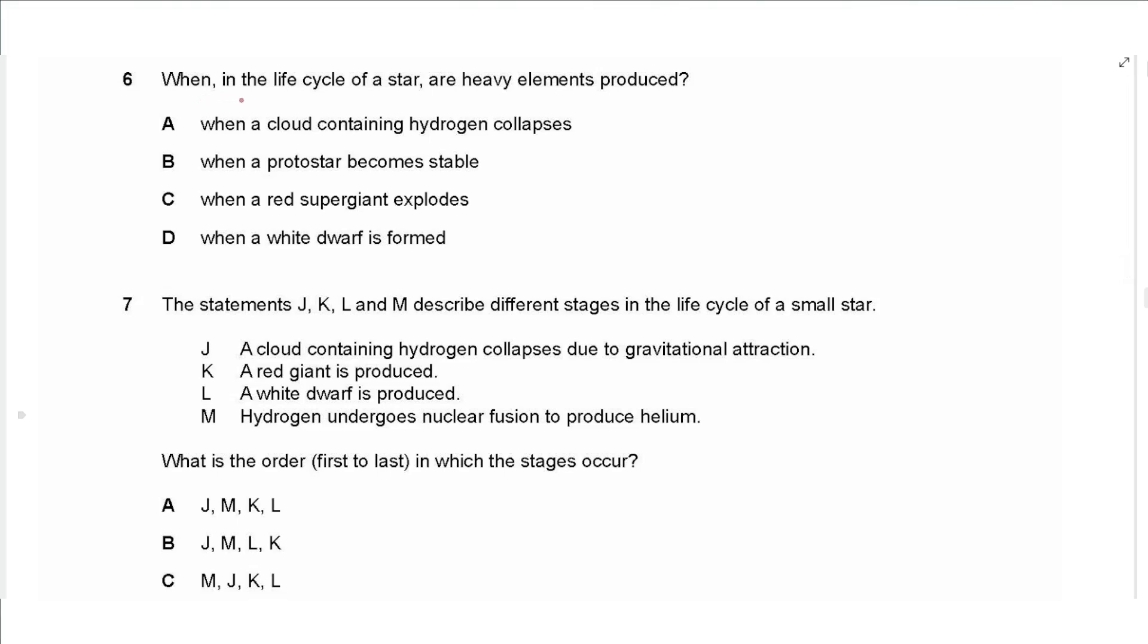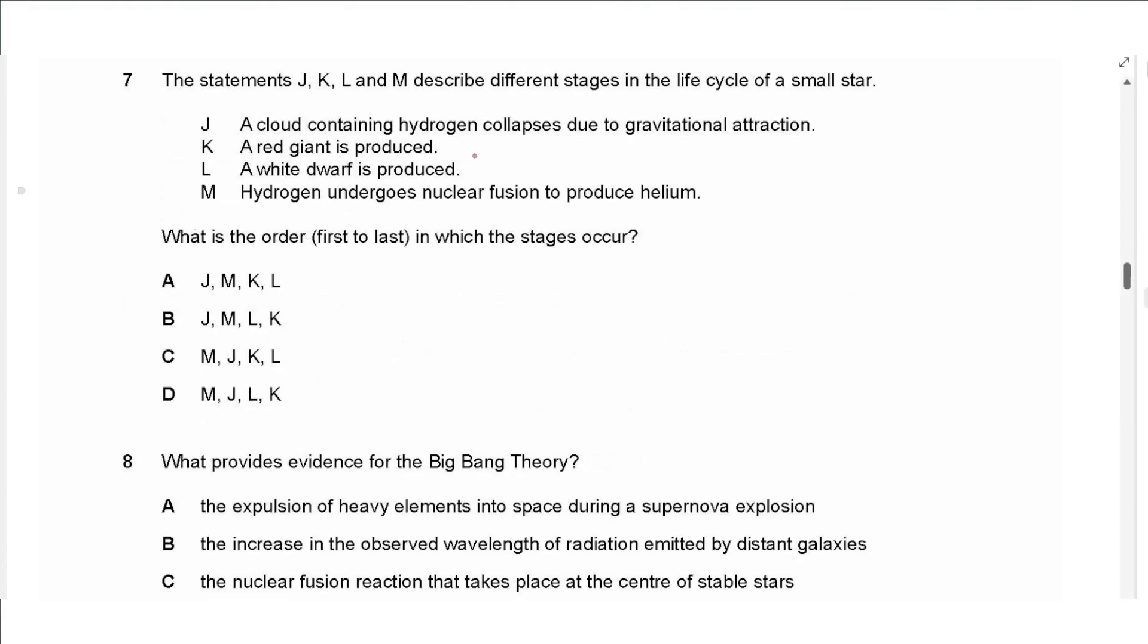The next question says, when in the life cycle of a star are heavy elements produced? When a cloud containing hydrogen collapses? No, this is the start of the life cycle. When a protostar becomes stable? No. When a red supergiant explodes? When a white dwarf is formed? Actually, it's C. Because as the core collapses, it leaves behind the elements that became fused together, making these heavy elements. Just before the explosion of the supernova, these heavy elements are present, and the supernova pushes it into space.